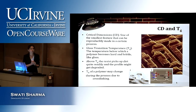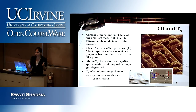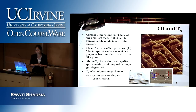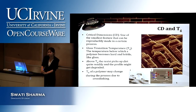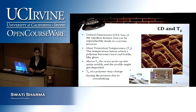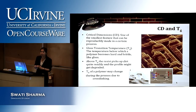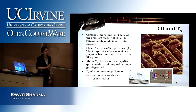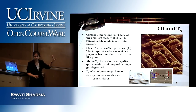Two key definitions: critical dimension and glass transition temperature. The critical dimension is the smallest feature size that you reproducibly and intentionally make in your pattern. Glass transition temperature is a special property of polymers — below this temperature, the material behaves like glass: hard and brittle. Above it, the polymer is more tacky and flows like a liquid. In photolithography, we usually do everything below the glass transition temperature.